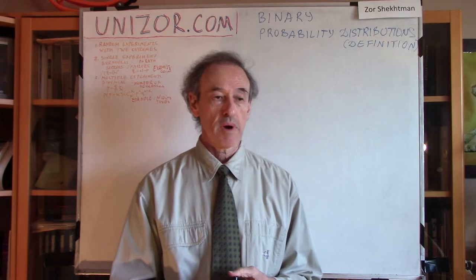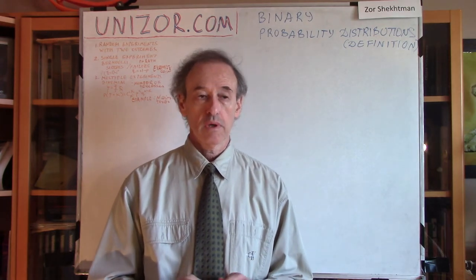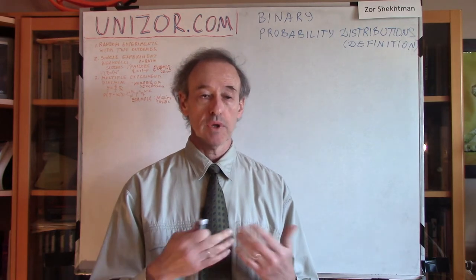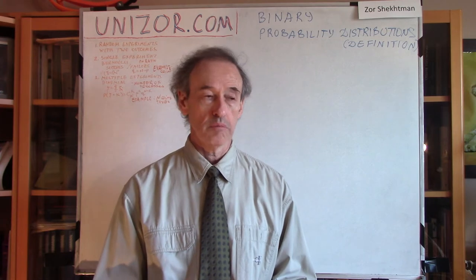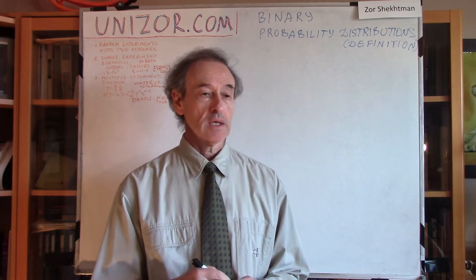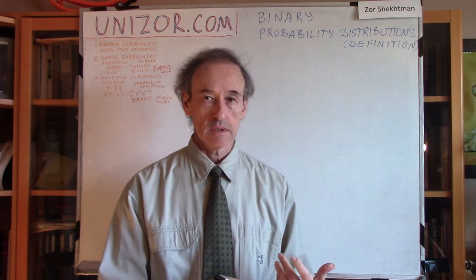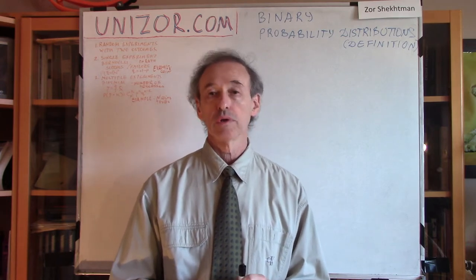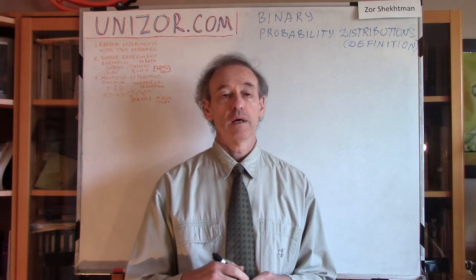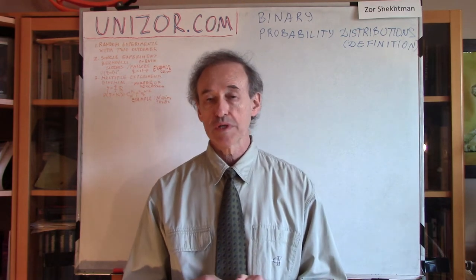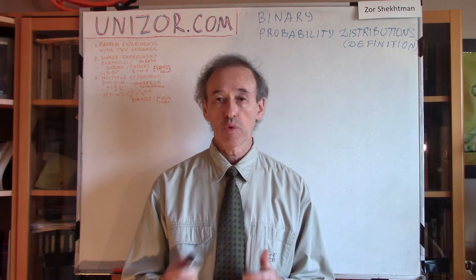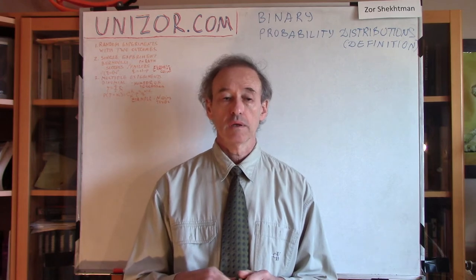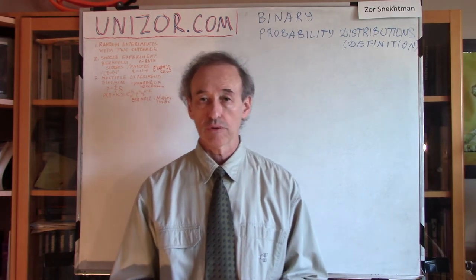The experiment can be a single experiment, or we can consider multiple experiments, each of them having these binary characteristics. The single experiment is usually called a Bernoulli experiment, or Bernoulli trial. Bernoulli was a Swiss mathematician of the 17th century, and he was the first who researched this type of probabilities and random distributions.